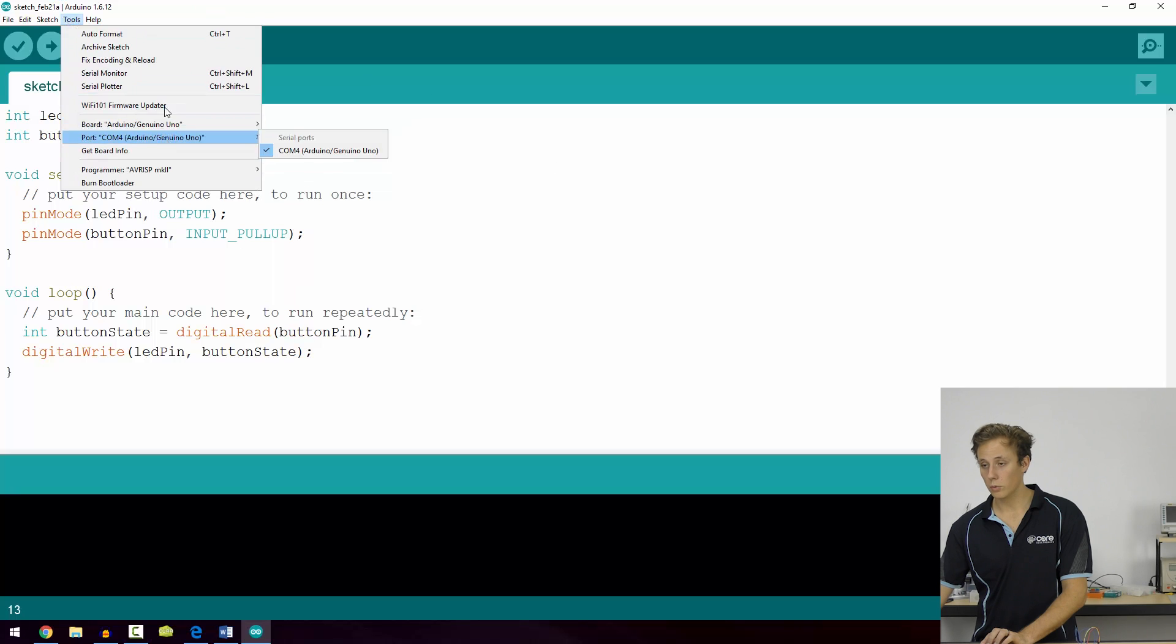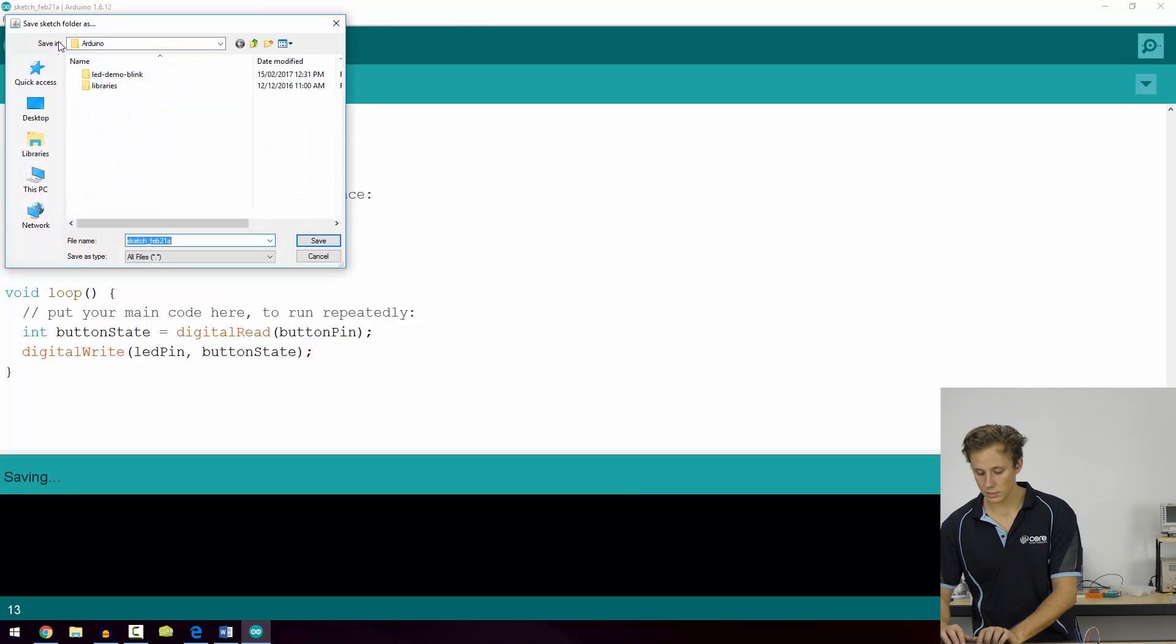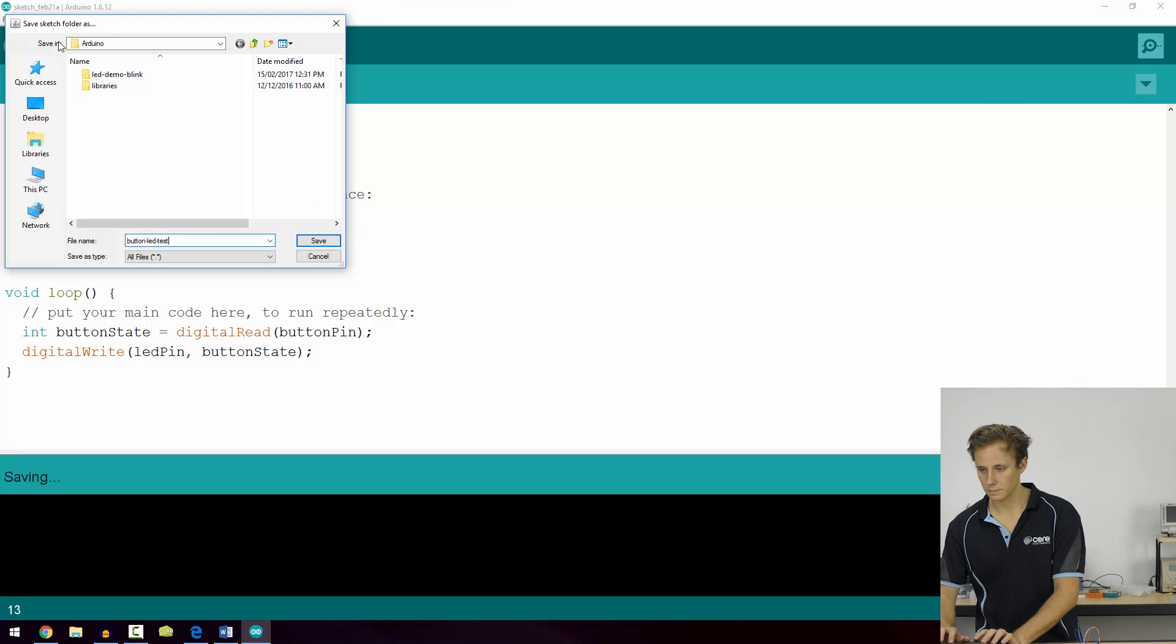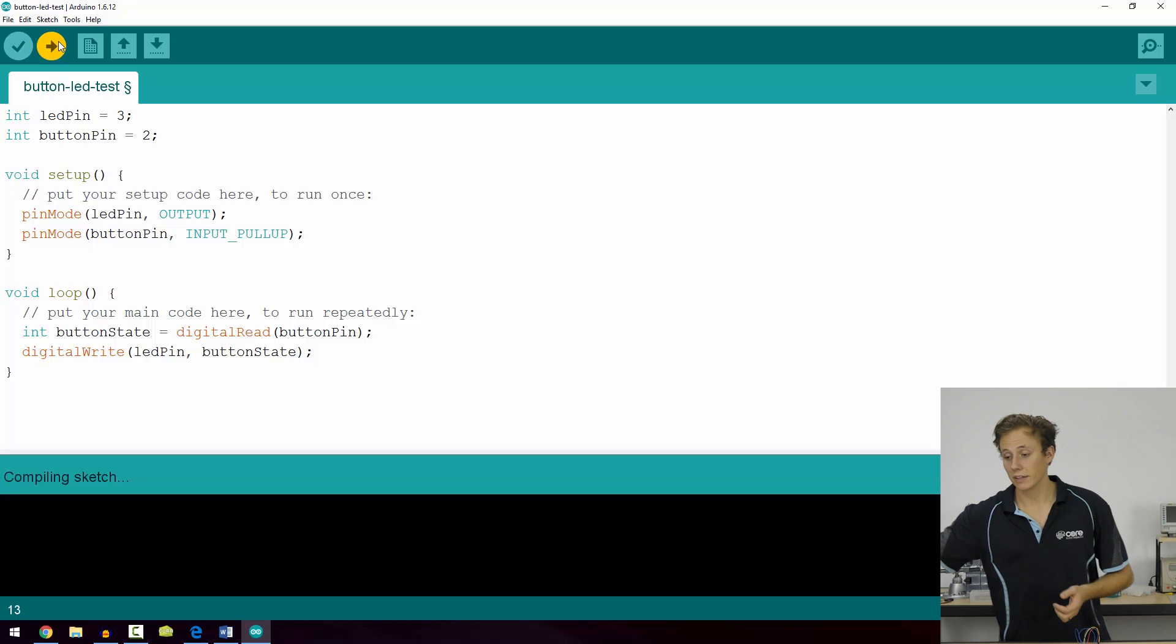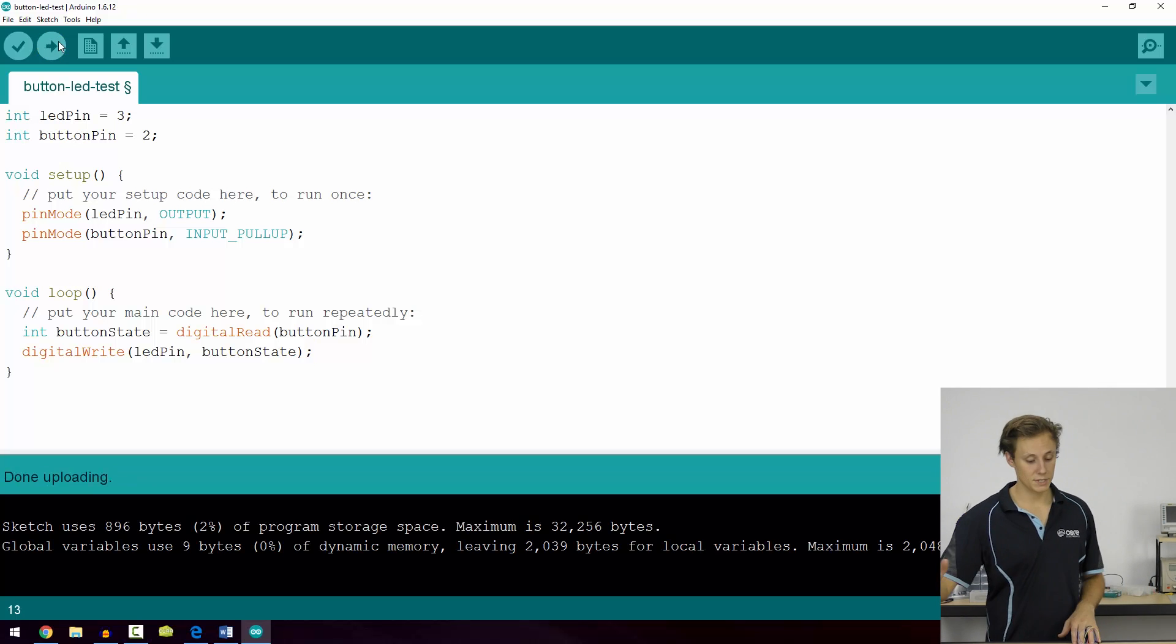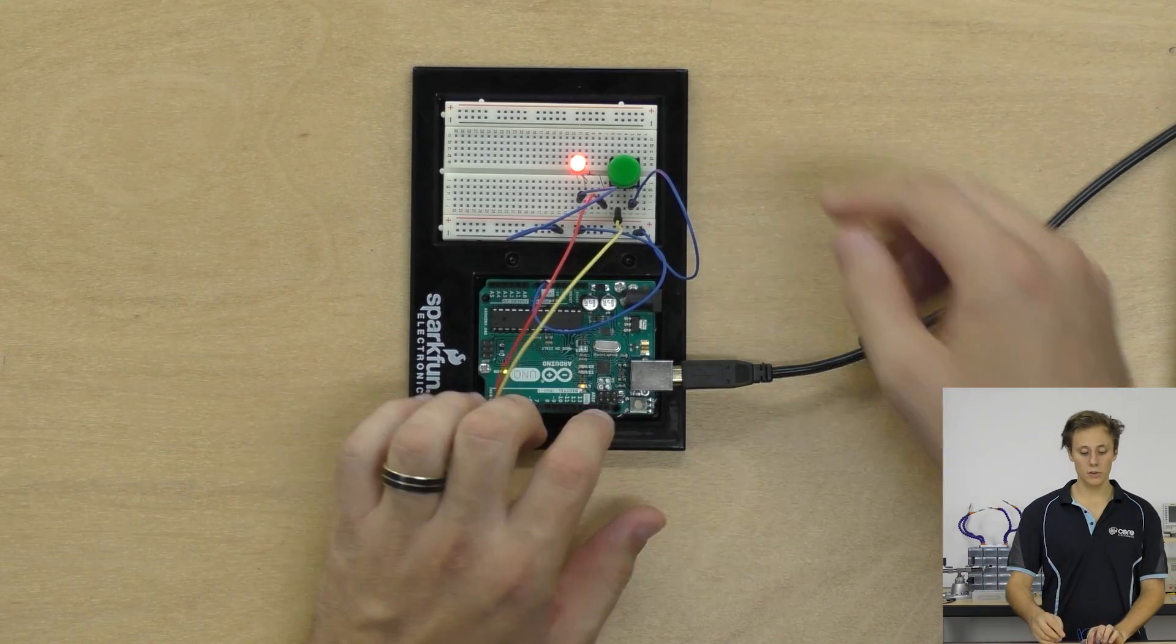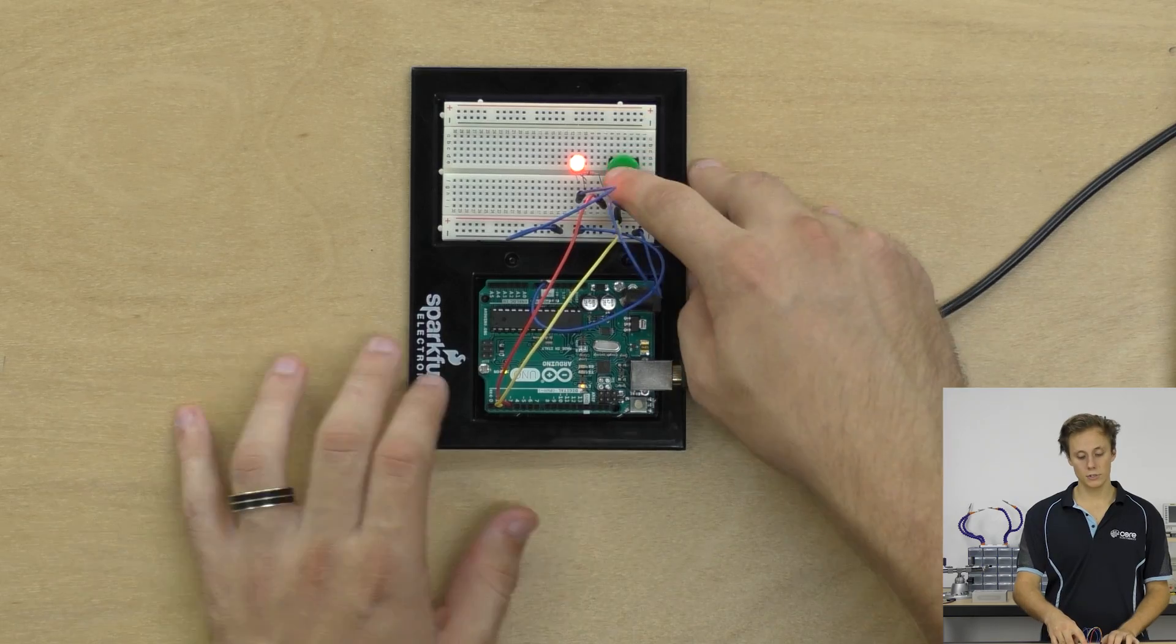It will ask you to save it. So let's call it button LED test. And it'll compile your sketch, make sure there's no errors. And if you do get an error, it'll come up in the debugging area in orange. Otherwise, it'll go straight to uploading and give you a success message. And the LED turns on. When we press the button, the LED turns off, and we release it, it turns on again.